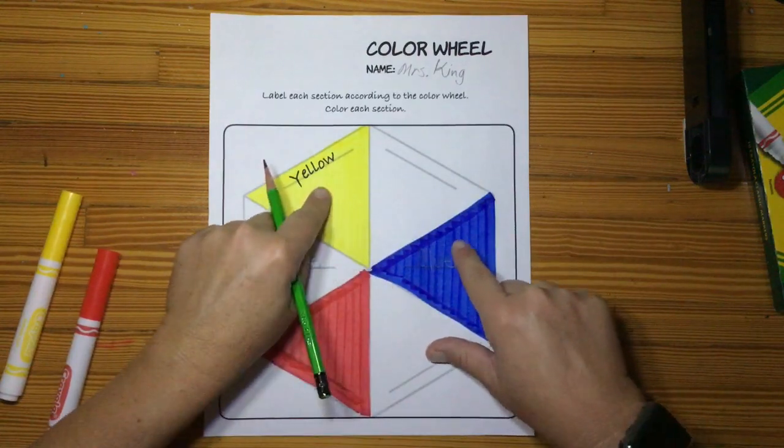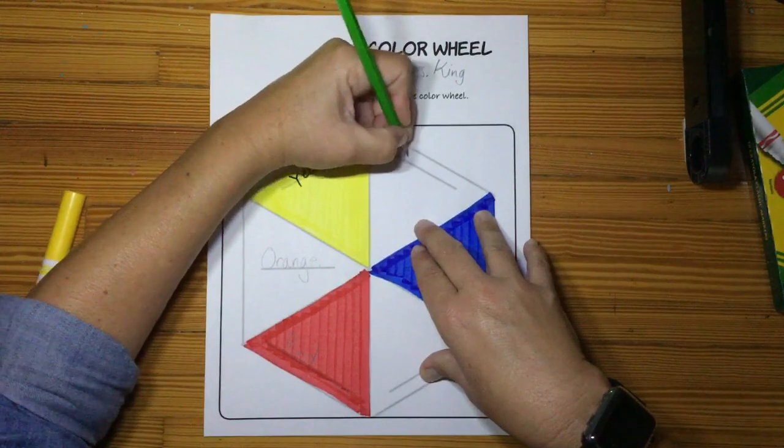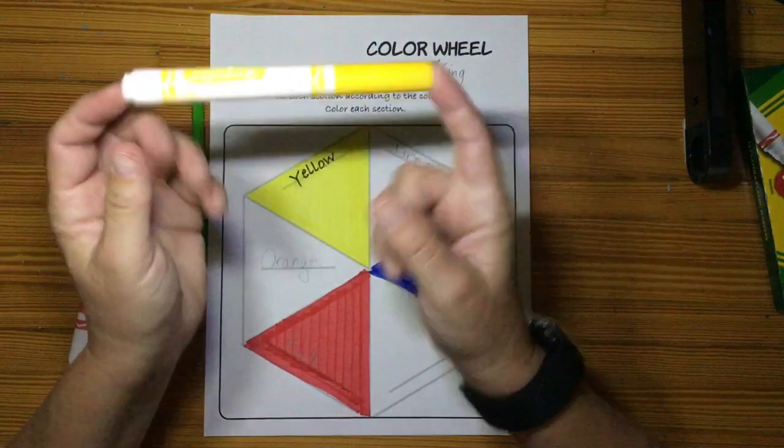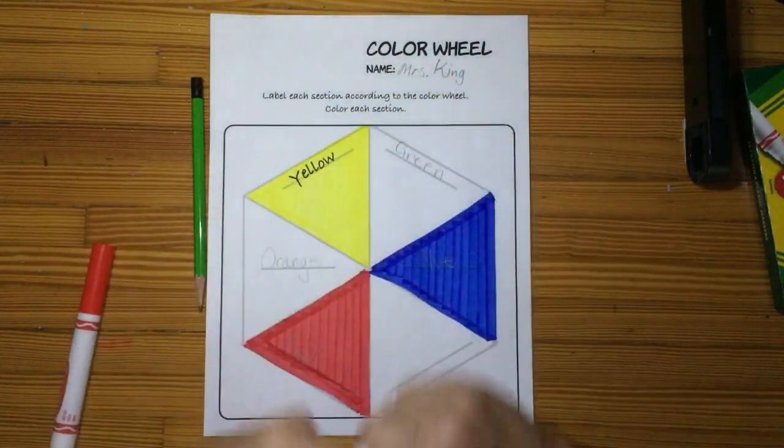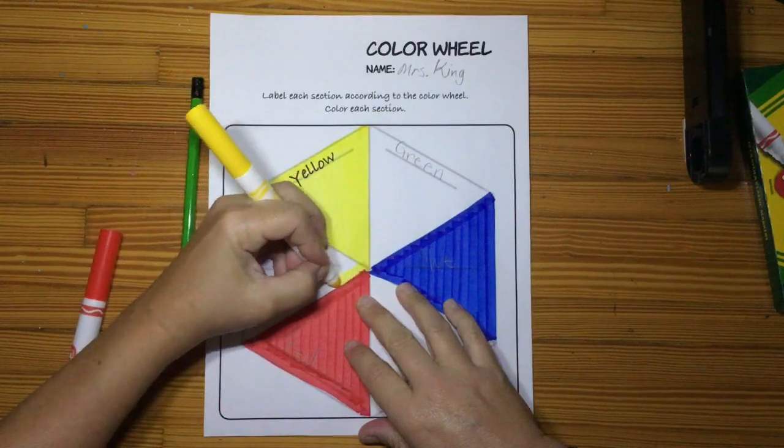Now if you mix blue and yellow together, you're going to get green, G-R-E-E-N. Now your first color is going to be yellow, because we're color mixing, and we need this to dry.